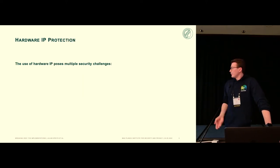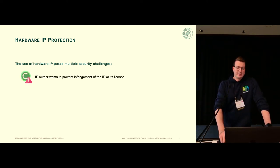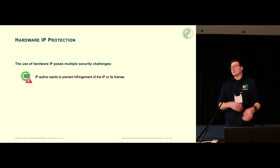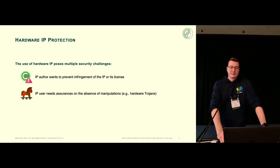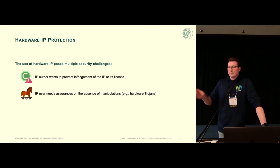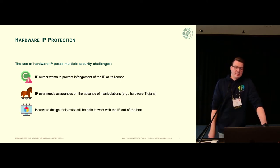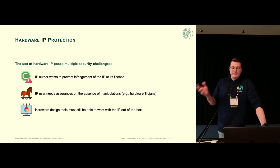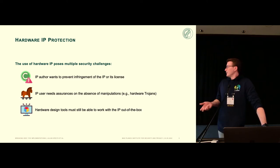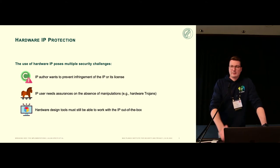Due to increasing complexity and time-to-market pressure, hardware design houses are required to often resort to well-proven third-party IP supplied by some IP author or IP vendor. Of course, if you use third-party IP, there are security challenges. The first is that the IP author wants to prevent infringement. The second is that the user needs assurances on the absence of hardware trojans or manipulations. And the tools that operate with the IP need to work with it — for synthesis, implementation, simulation, and so on.